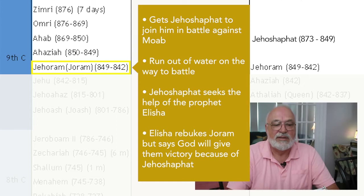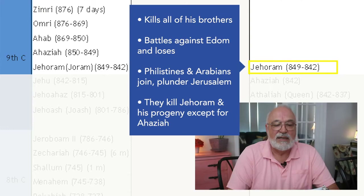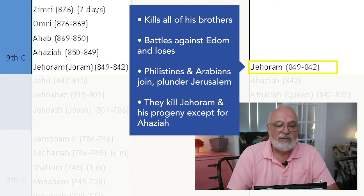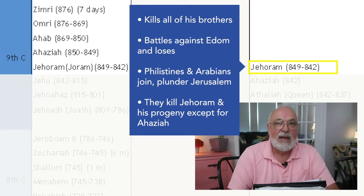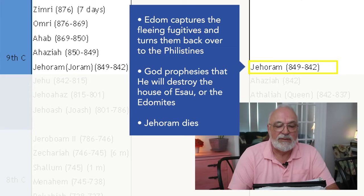Jehoshaphat dies and his son Jehoram becomes king and kills all of his brothers. Jehoram battles against the Edomites and loses. Later the Philistines and the Arabians join together to plunder Jerusalem. They kill Jehoram and all of his progeny except for one son, Ahaziah. Edom captures the fleeing fugitives, turns them back over to the Philistines, and as a result, God prophesies he will destroy the entire house of Esau, or the Edomites.